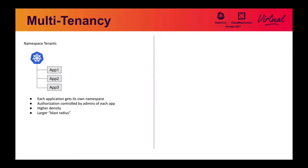Finally, namespace multi-tenancy — this is where you get the most richness with RBAC. Every application gets its own namespace or set of namespaces. Authorization will be controlled by admins — you want application or team admins controlling it rather than system admins. You get much higher density, not just of your resources from a hardware standpoint but also from your people standpoint. You can better utilize your cluster admins and have application admins inside of each team. The major downside is that if you don't have proper controls in place, you can have a larger blast radius.